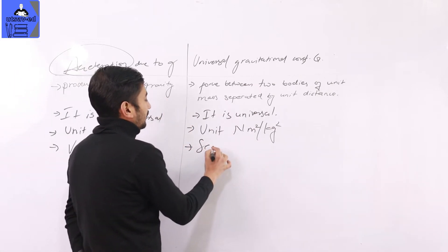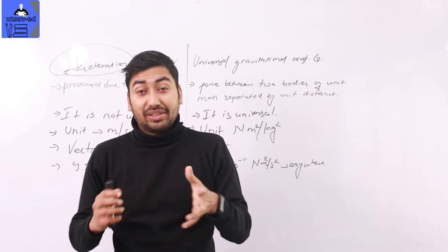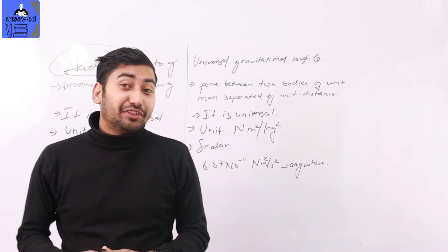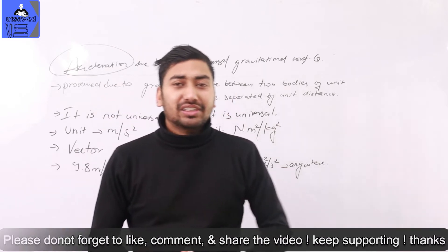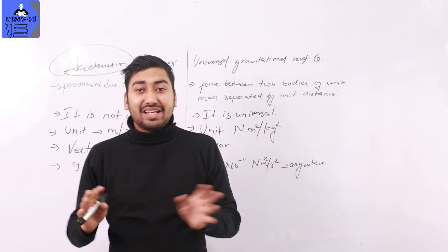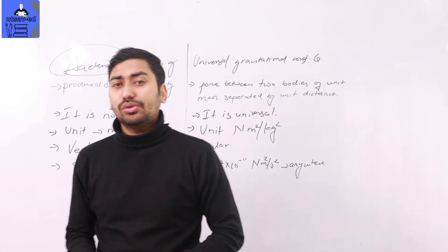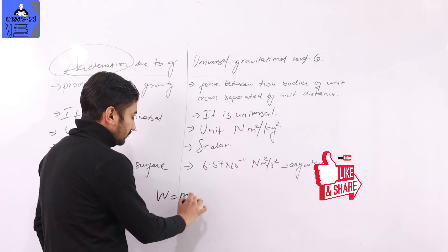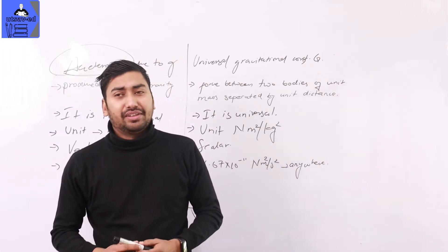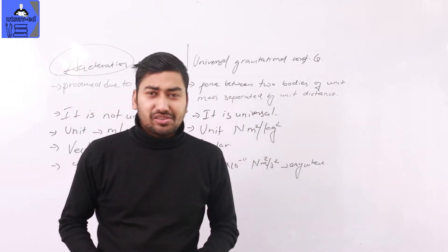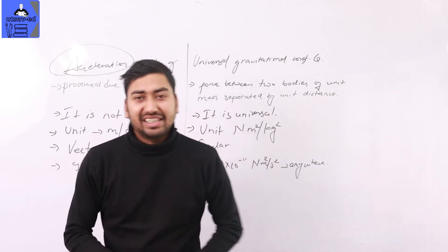Mass is the amount of substance contained in an object — its unit is kg. Weight is a force, so its unit is Newton — not kg. Weight equals mass into gravity: W = mg. Mass and weight are different. Mass is the amount of substance contained in a body; weight is the force exerted due to acceleration due to gravity. Mass is measured using a beam balance; weight is measured using a spring balance.